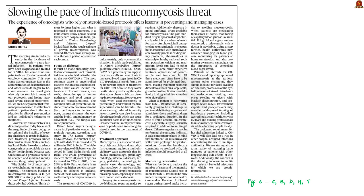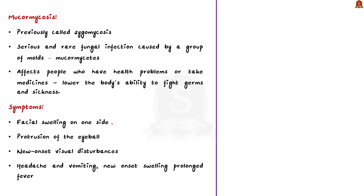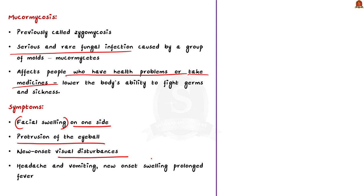Now let us take up this editorial, which discusses mucormycosis infection, the issues enduring its treatment, and suggestions to improve public health overall. Mucormycosis is a serious, rare fungal infection that mainly affects people who have health problems or who have taken medicines which lower their immunity. It most commonly affects the sinuses or the lungs. Symptoms include facial swelling on one side, protrusion of the eyebrow, visual disturbances, headache, vomiting, new onset of swellings, ulcers, blackish discoloration and prolonged fever.